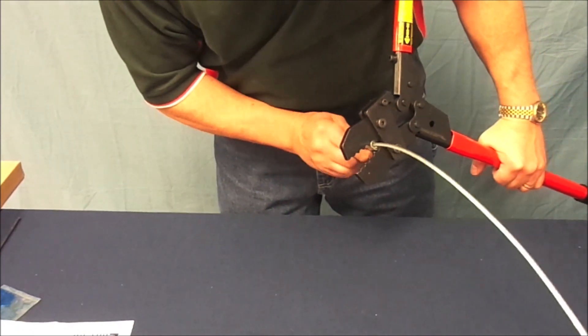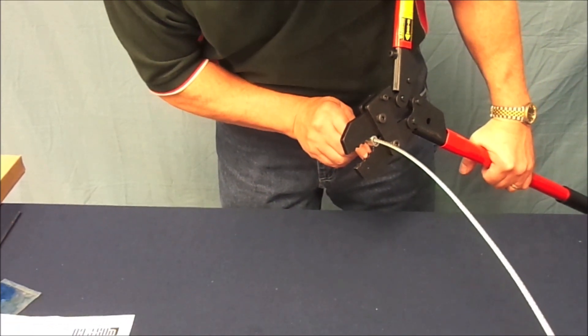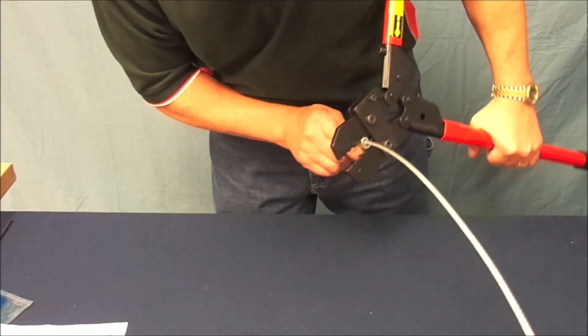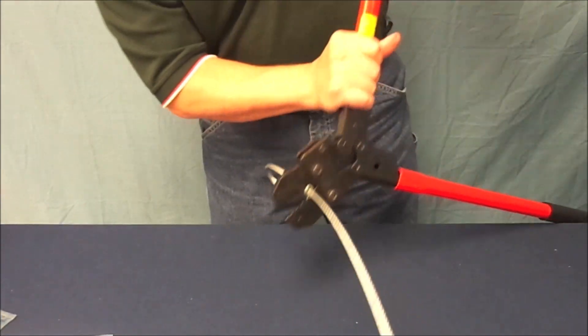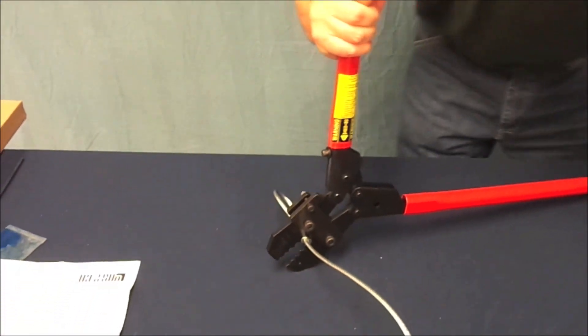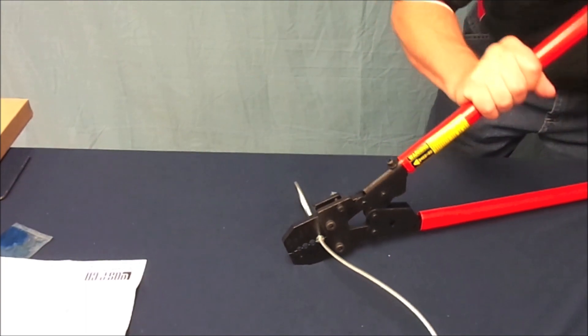For this demonstration we will be compressing a 3-16th oval sleeve which requires the largest rear cavity of the tool. Starting at the end of the fitting furthest from the loop begin to make your first compression.